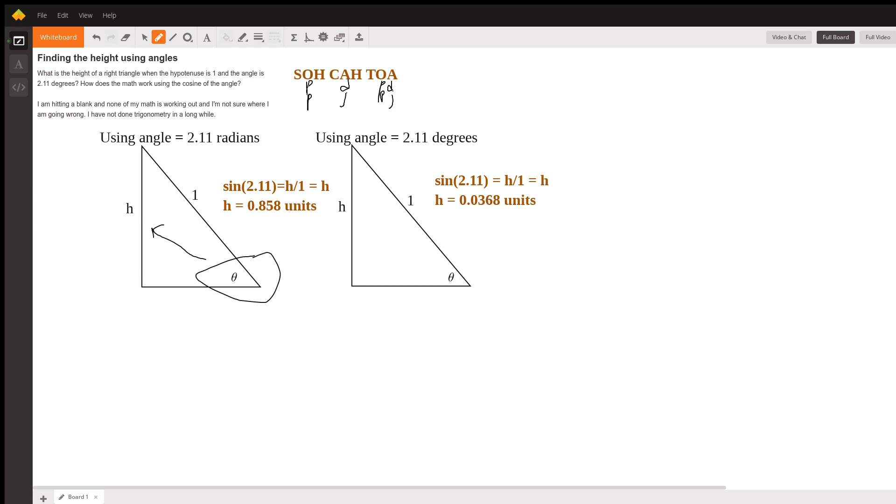Now it seems to me that if the hypotenuse is one unit, the height is a lot more likely to be 0.85 units rather than 0.0368 units. So I'm pretty sure that you need to put your calculator in radians mode.